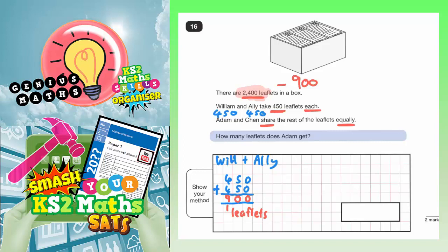Because that 2,400 subtract the 900 will leave us with how many that Adam and Chen have got between them. Let's do that. 2,400 subtract 900. Let's work that out.